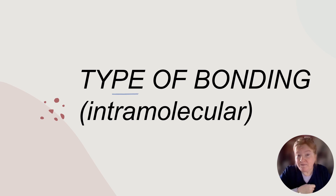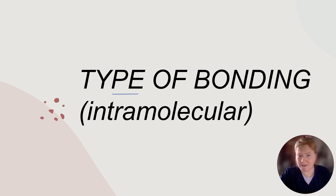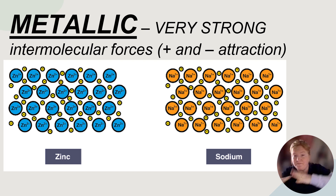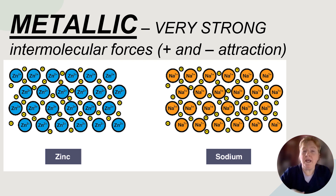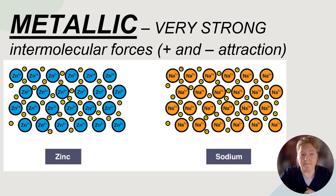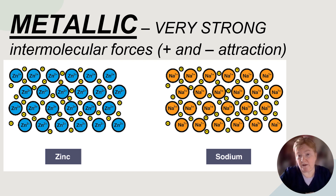In addition, the type of bonding — the type of intramolecular force — affects the intermolecular force. For example, in metallic bonding, the valence electrons are in a mobile sea, free-floating around those positive cations, so the electrons are moving all around. These have very strong intermolecular forces because there's a lot of attraction between positives and negatives happening as those electrons move around in this mobile sea. So metallic bonding results in very strong intermolecular forces.